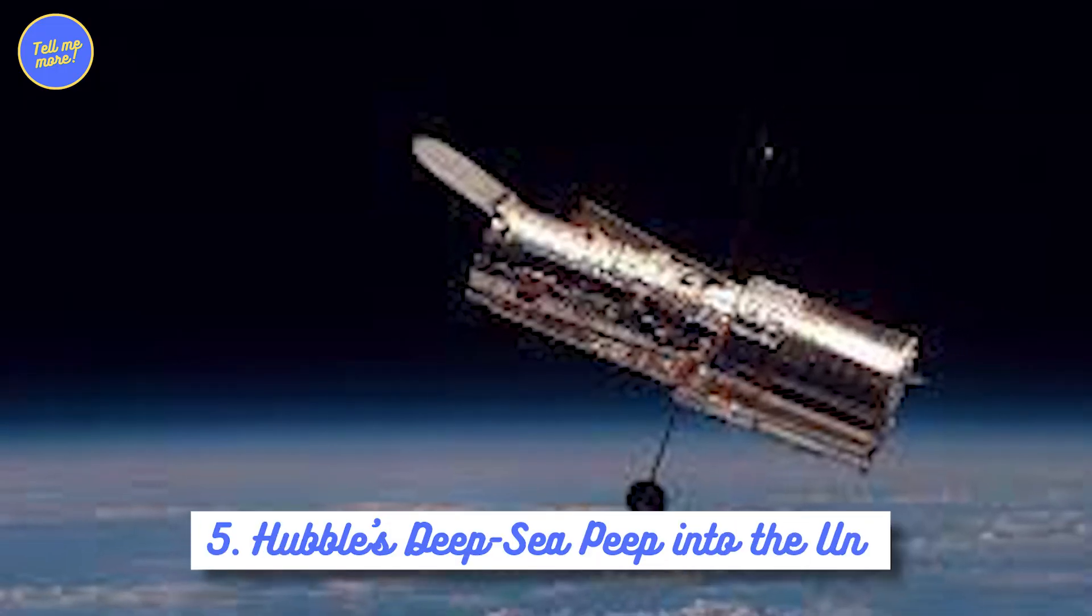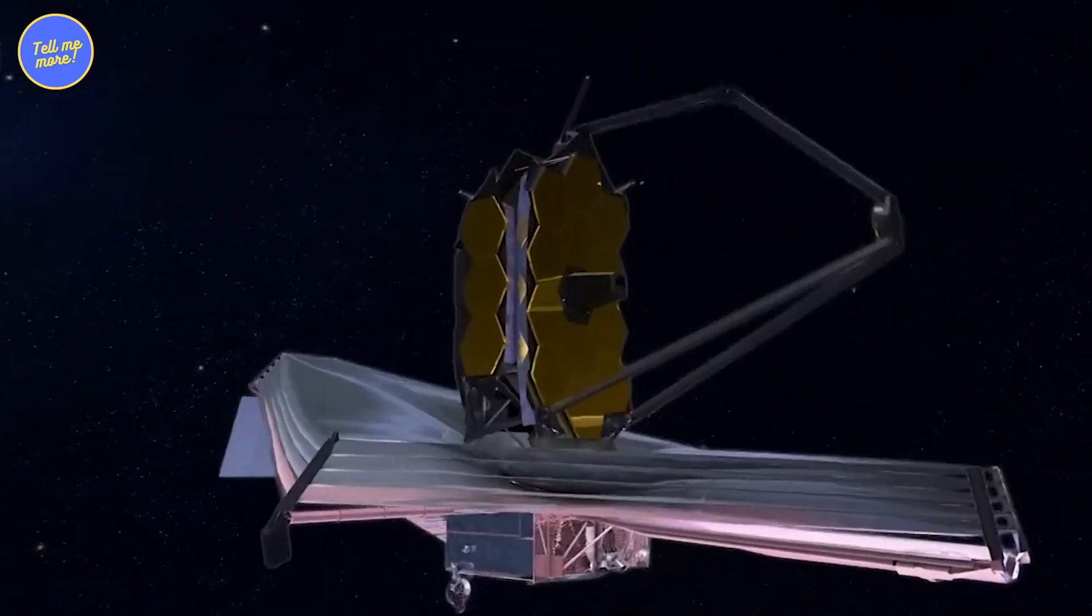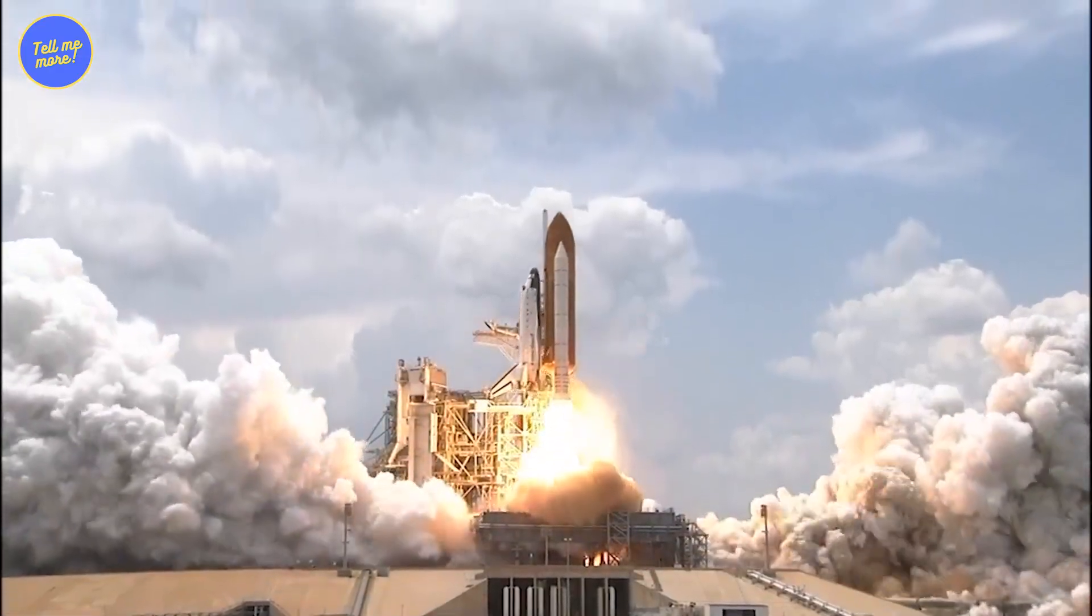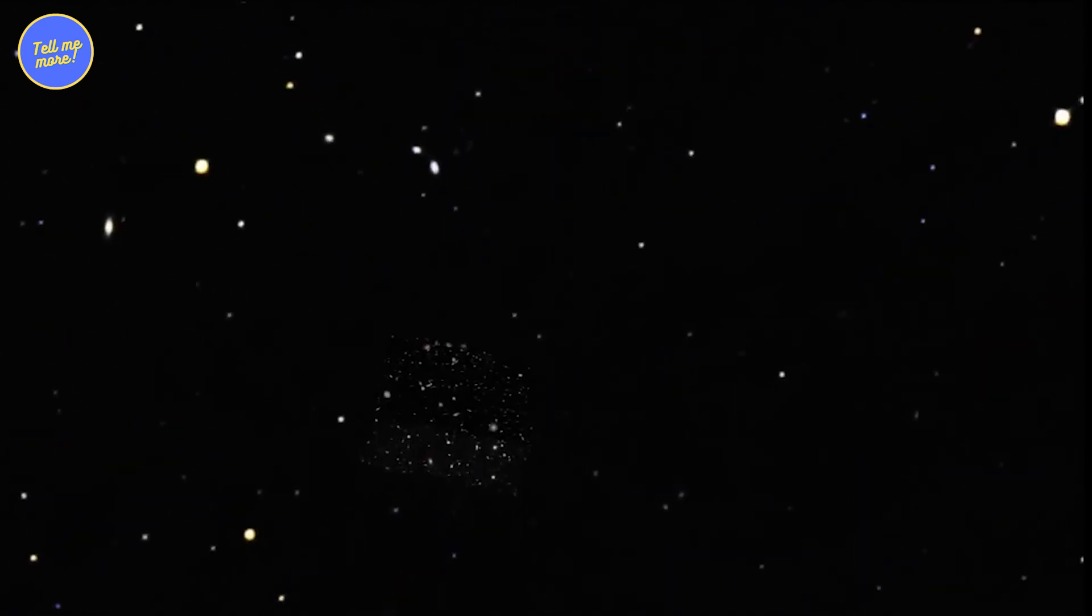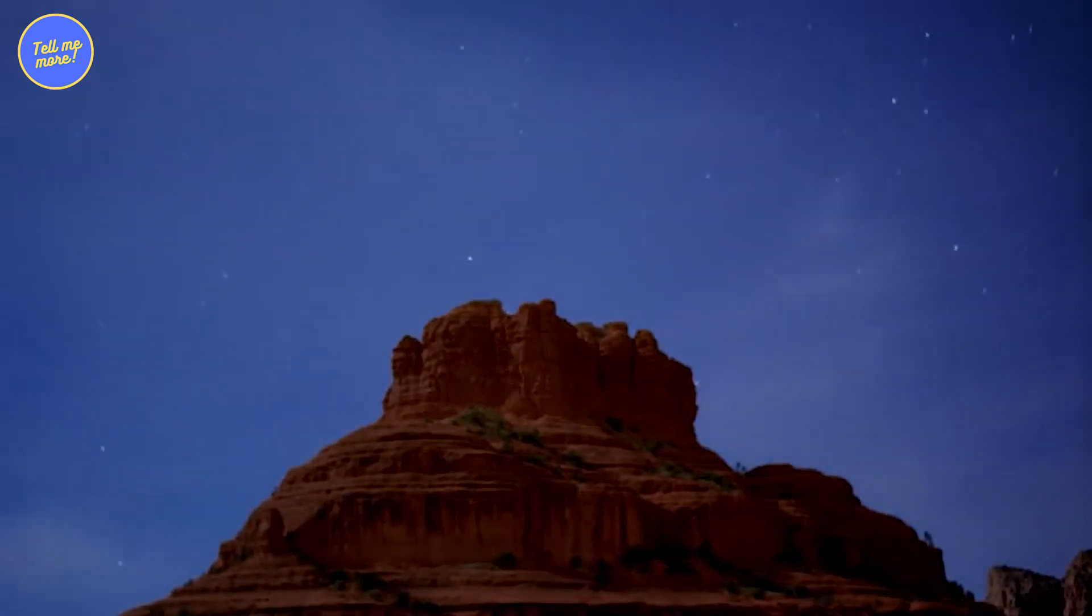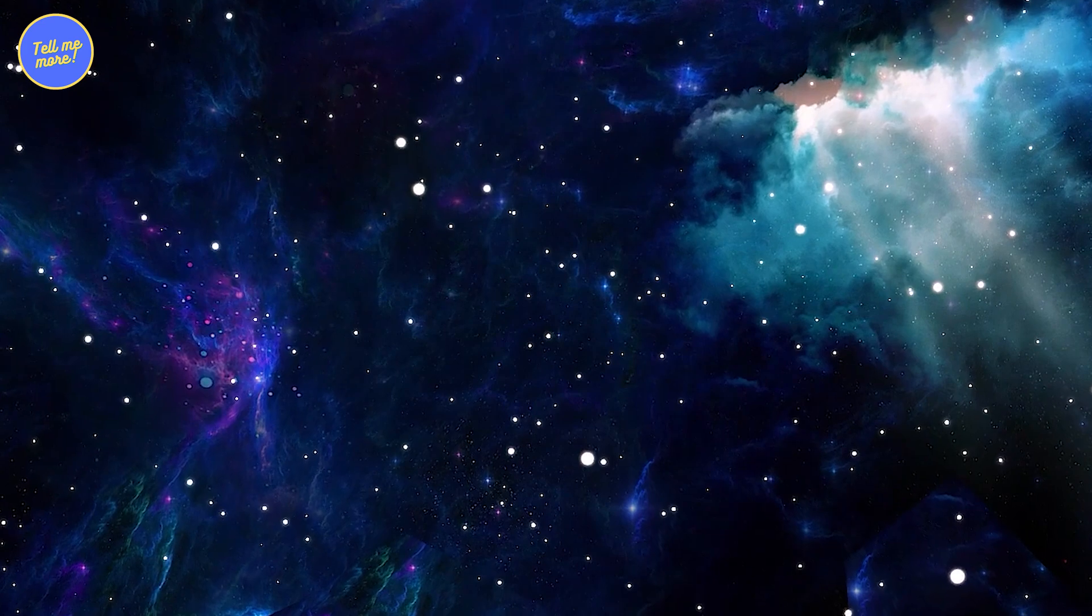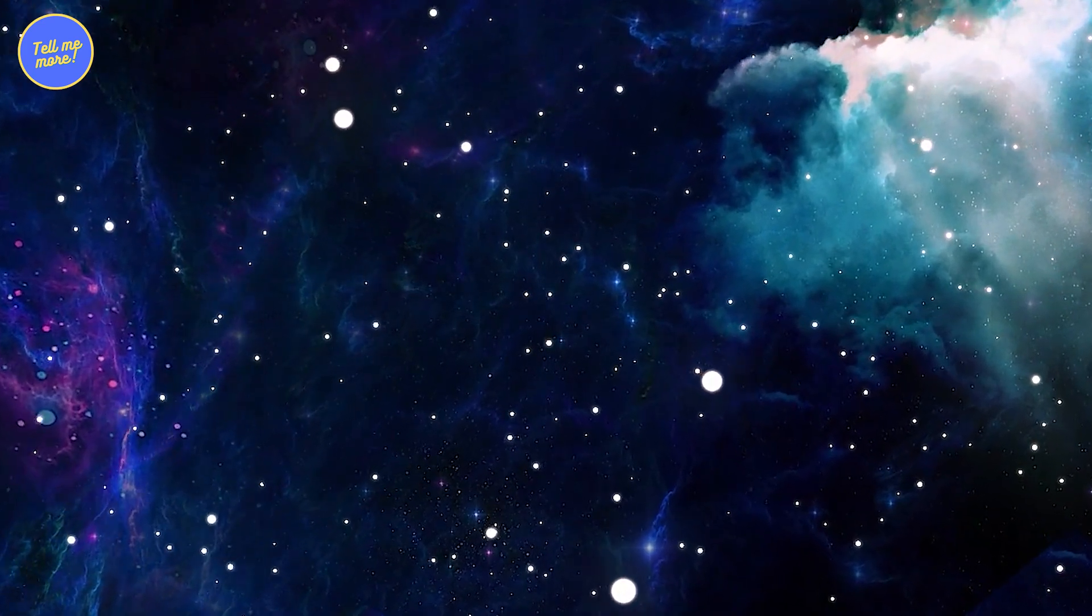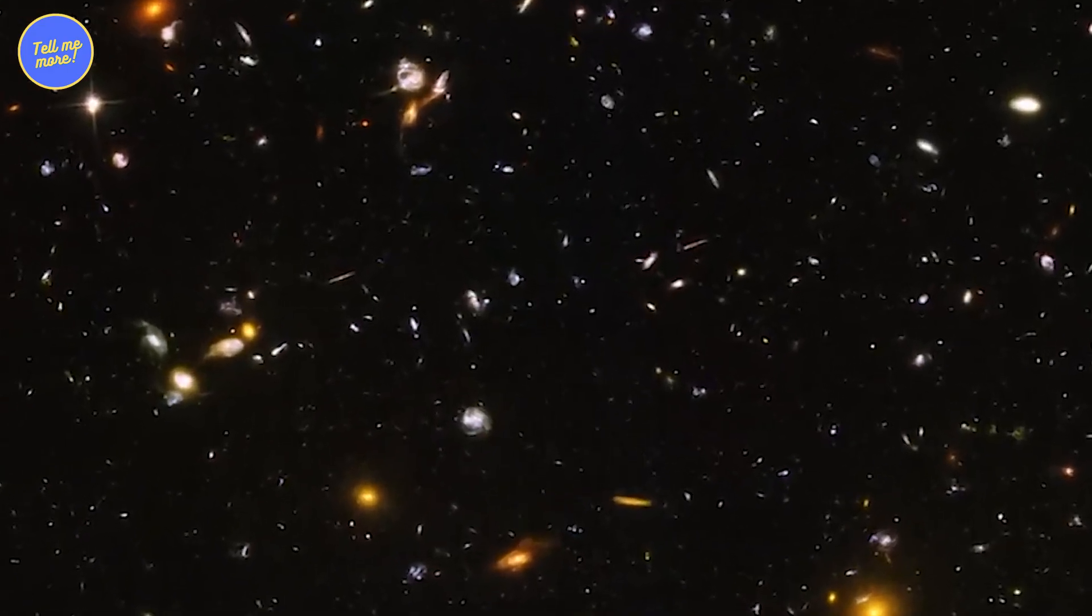5. Hubble's Deep Sea Peep Into the Universe. Hubble Space Telescope is like the superstar of space gadgets. Launched in 1990, it revolutionized our view of the cosmos. But its deep-field images? They're like Hubble on steroids. Imagine pointing the telescope at a tiny, seemingly empty patch of sky for days on end. What do you get are mind-blowing images containing thousands of galaxies, each with billions of stars.